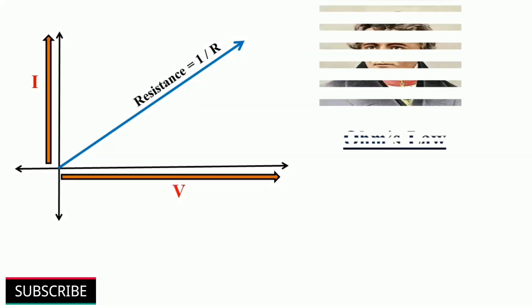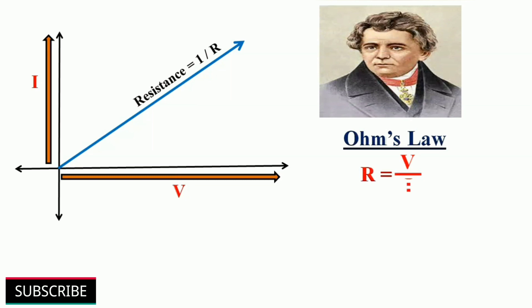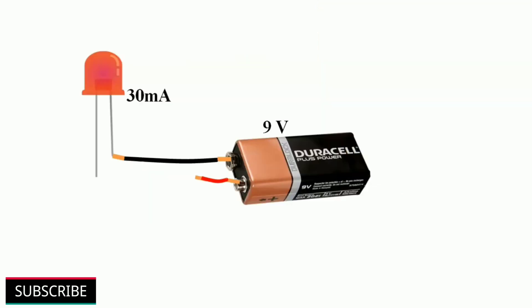The relationship between current, voltage, and resistance is described by Mr. Ohm, a German scientist in 1827. Ohm's law defines that electrical resistance equals voltage divided by current.